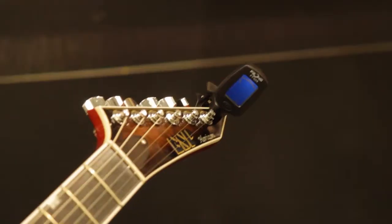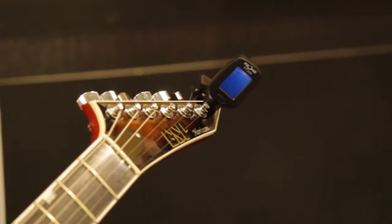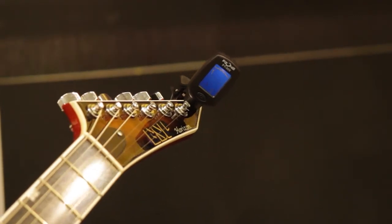So once you've selected G on the clip-on tuner, the first thing to do is to actually pick the first note on the guitar which, as we said earlier, is an E.